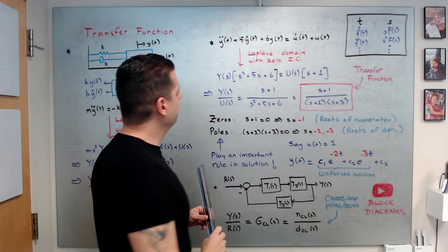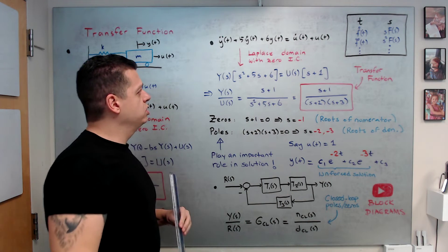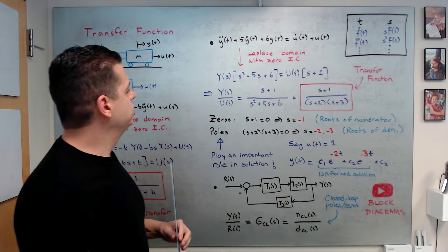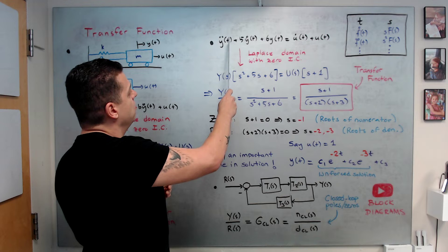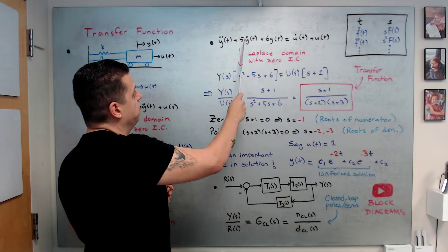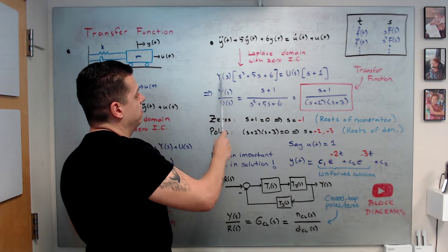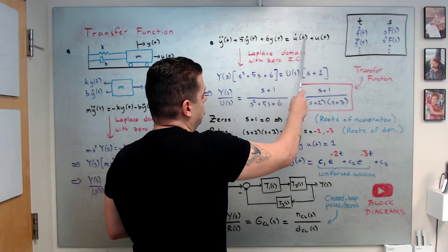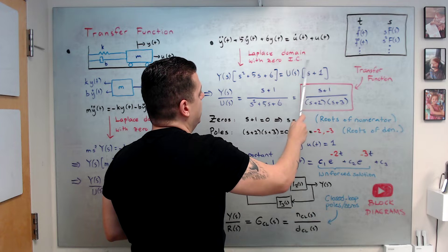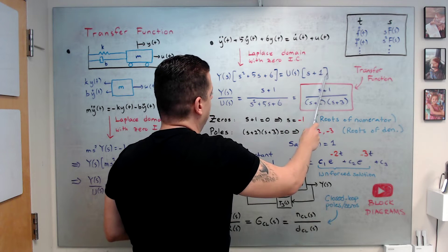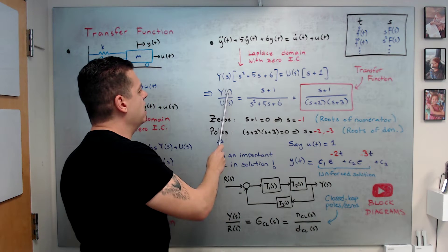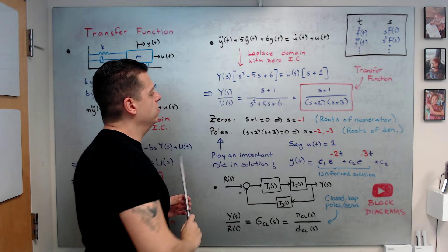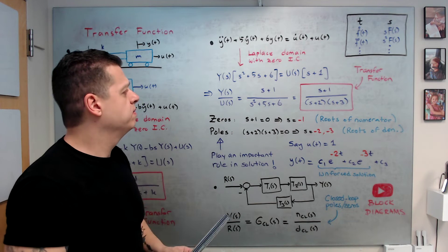Going to the Laplace domain with zero initial conditions using the Laplace table, we get: s²·Y + 5s·Y + 6Y = s·U + U. So the left side is Y(s² + 5s + 6) and the right side is U(s + 1). Dividing output by input gives the transfer function: (s + 1) / (s² + 5s + 6).